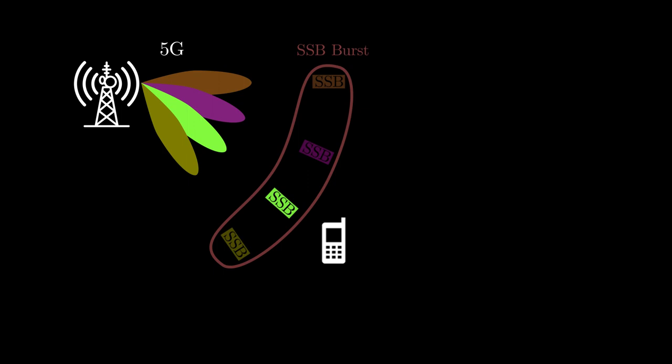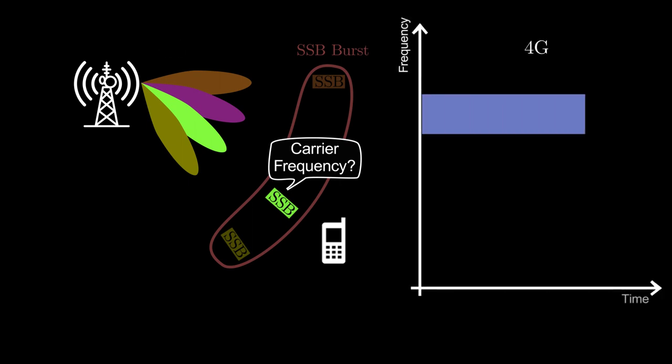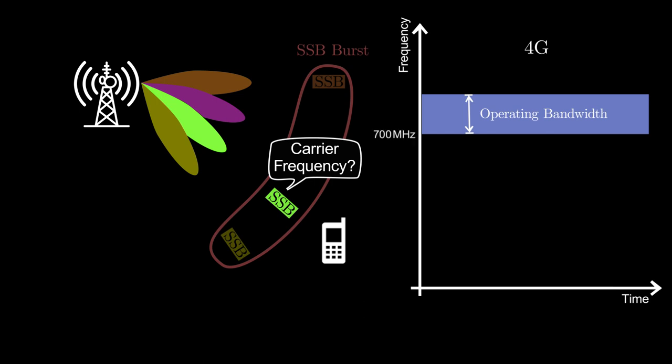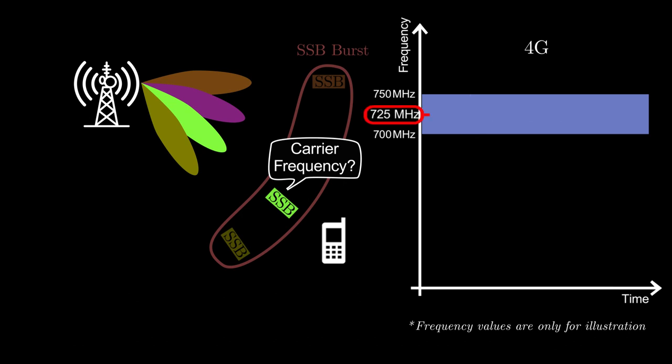Another challenge is that a UE doesn't know the carrier frequency of SSB. Therefore, it has to be discovered using a brute force method. In 4G, base station sends SSB at the center frequency of the operating bandwidth. For example, if base station uses an operating bandwidth from 700 MHz to 750 MHz, then the SSB is transmitted at 725 MHz.